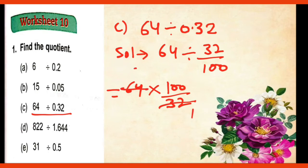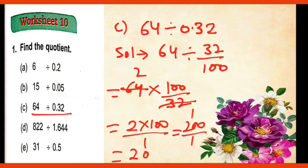32 ones are 32 and 32 twos are 64. So 2 into 100 upon 1. So that is 200 upon 1. And our answer is 200.